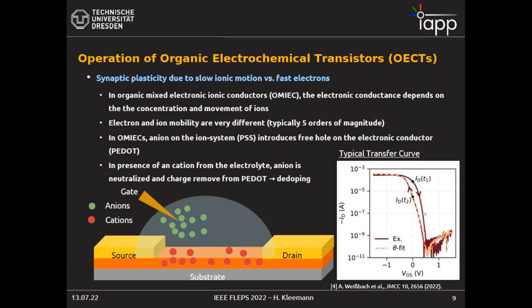In between the on and off states, we see features that are quite appealing for neuromorphic computing. In particular there is a huge hysteresis. Very surprisingly, if you look at the models available for OECTs, no one talks about this — they essentially use a FET model that can more or less fit the transfer characteristics, but completely ignores all the dynamic effects and hysteresis. It's a very unsatisfying situation.